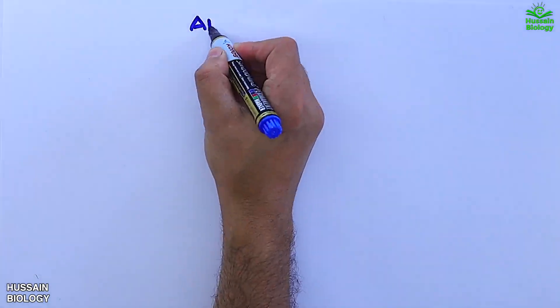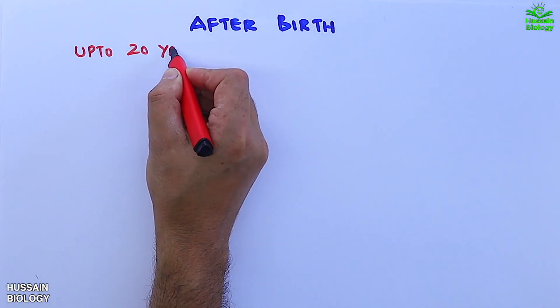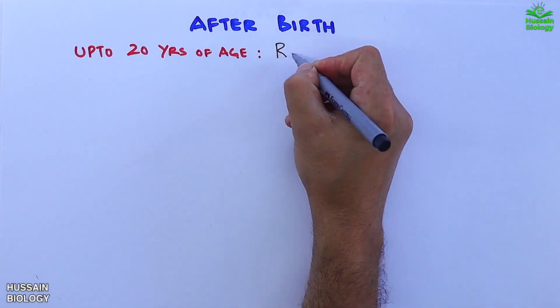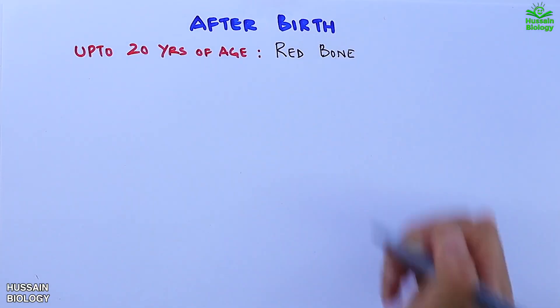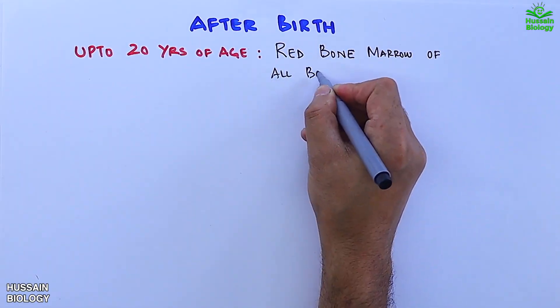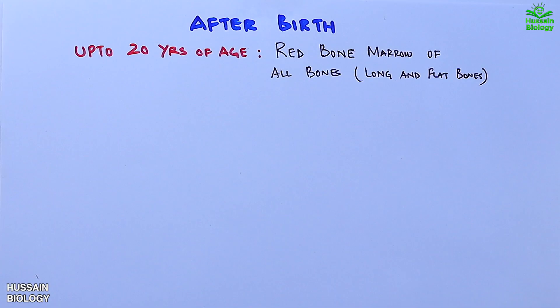Moving towards after-birth life: the first phase is up to 20 years of age, in which RBCs are produced from the red bone marrow of all bones — that's in long as well as flat bones.